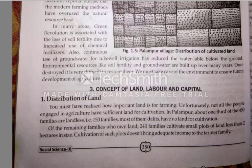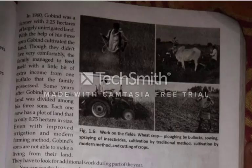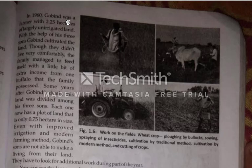On the next page there is a story of Gobin. Through this we will understand it more. In 1916, Gobin was a farmer with 2.25 hectares of largely unirrigated land, meaning he had a small plot with no irrigation facilities.